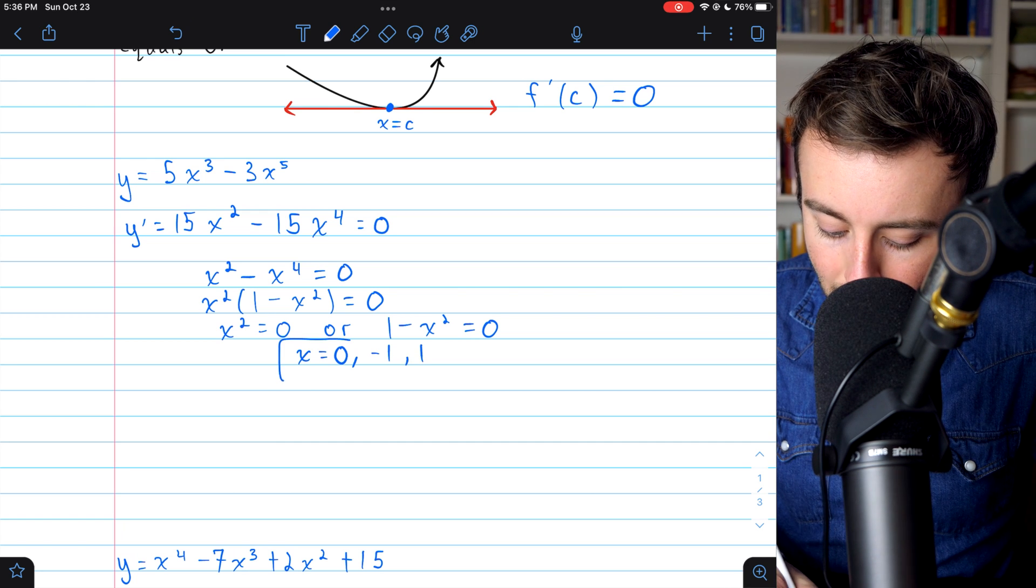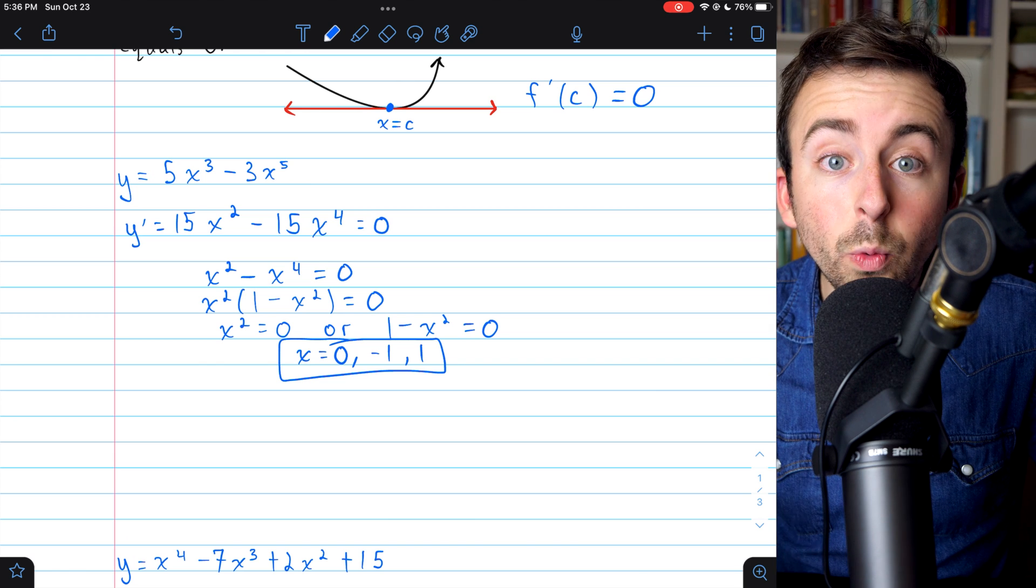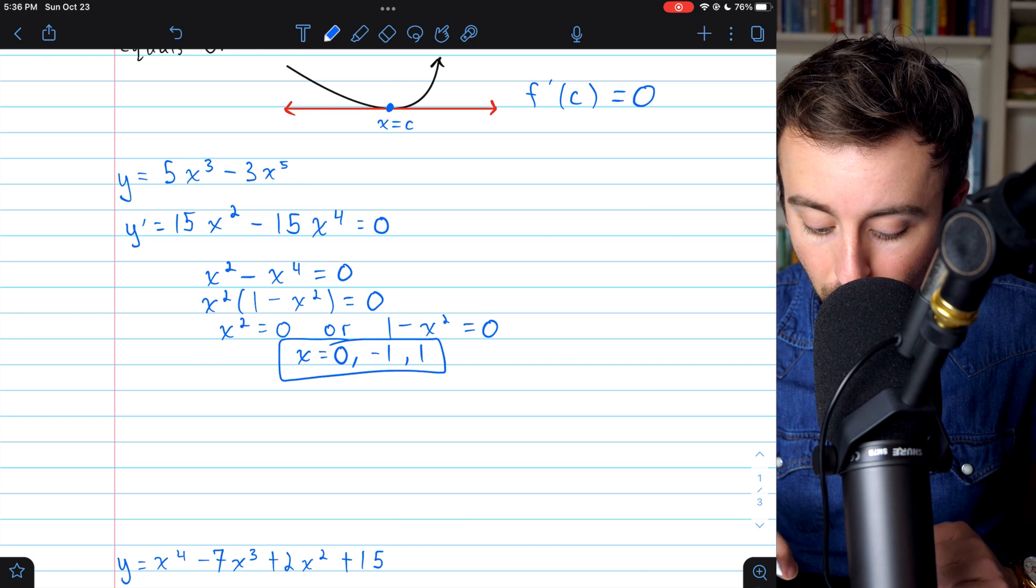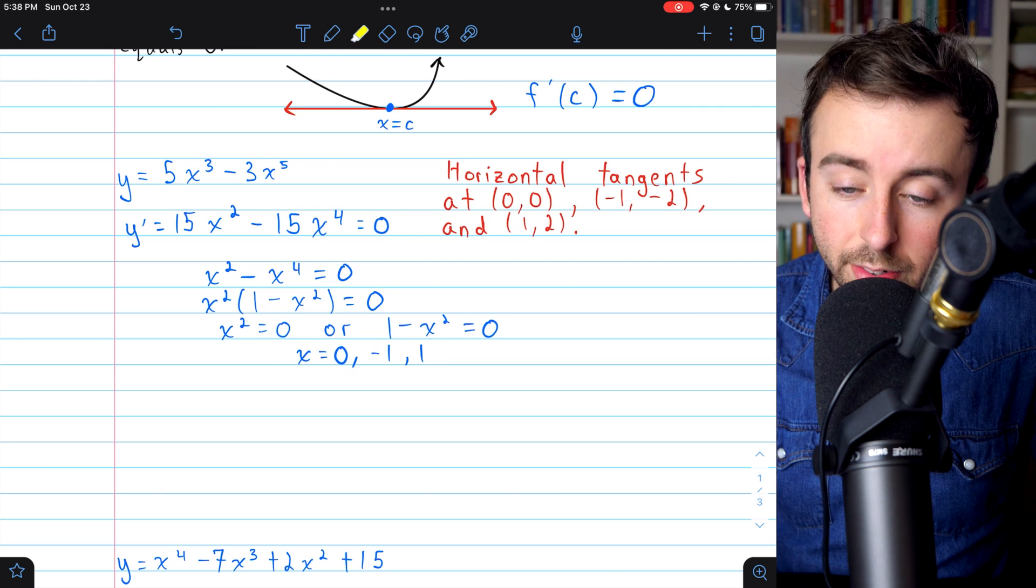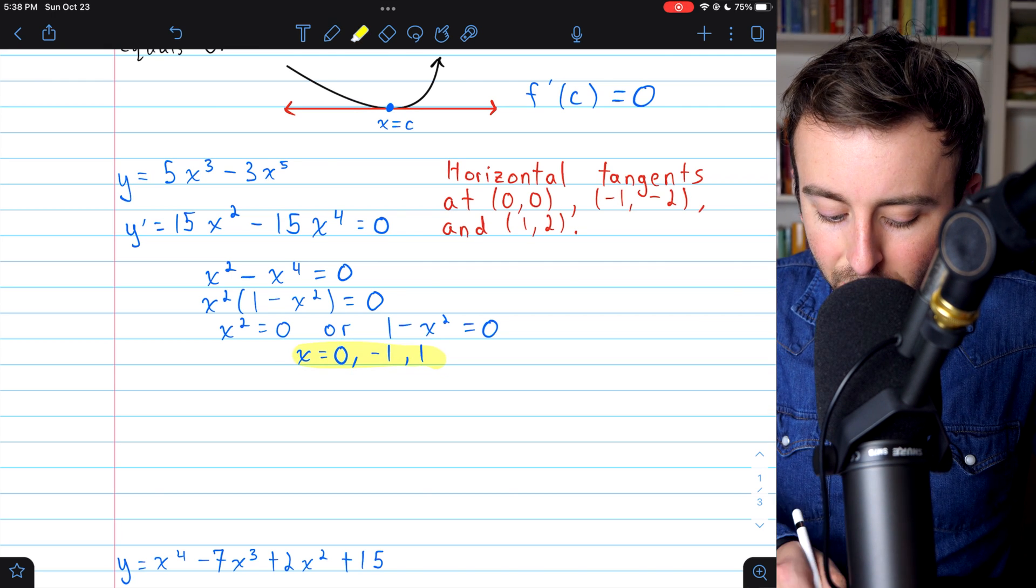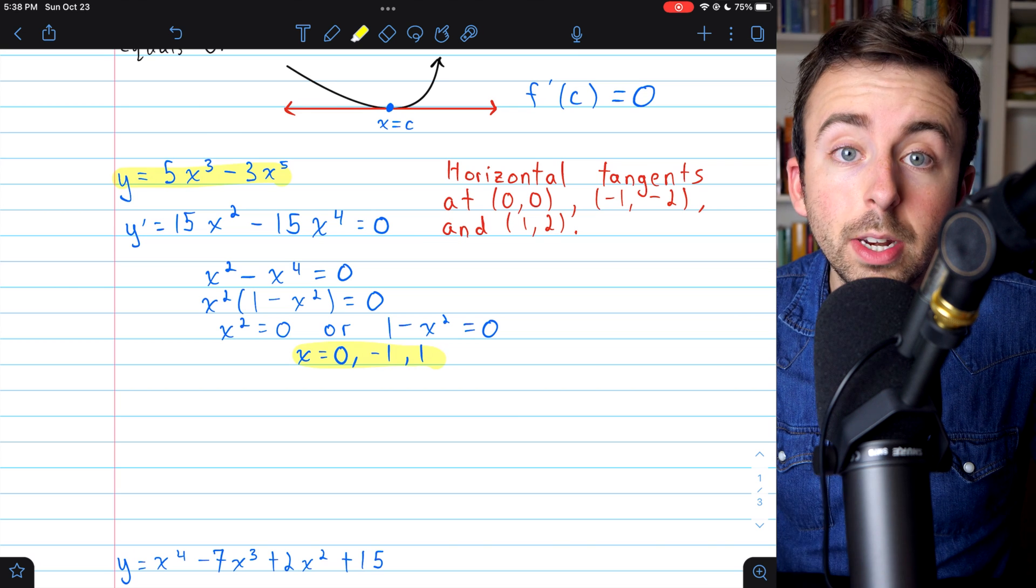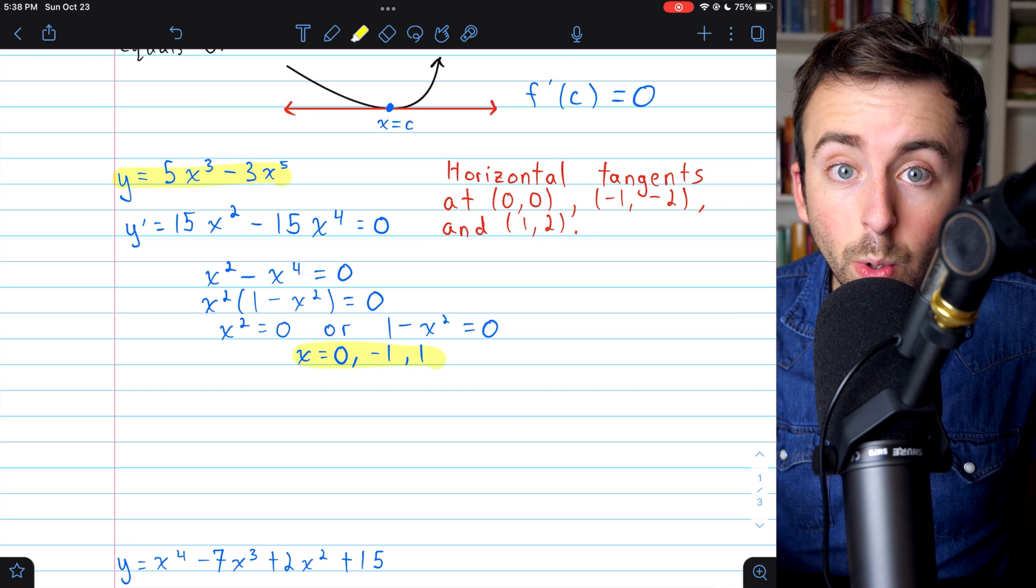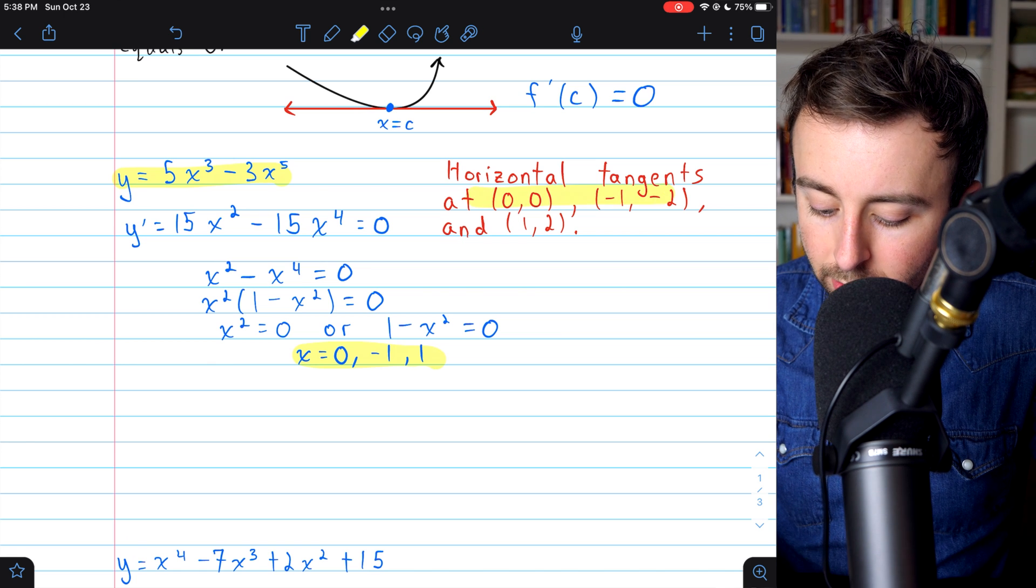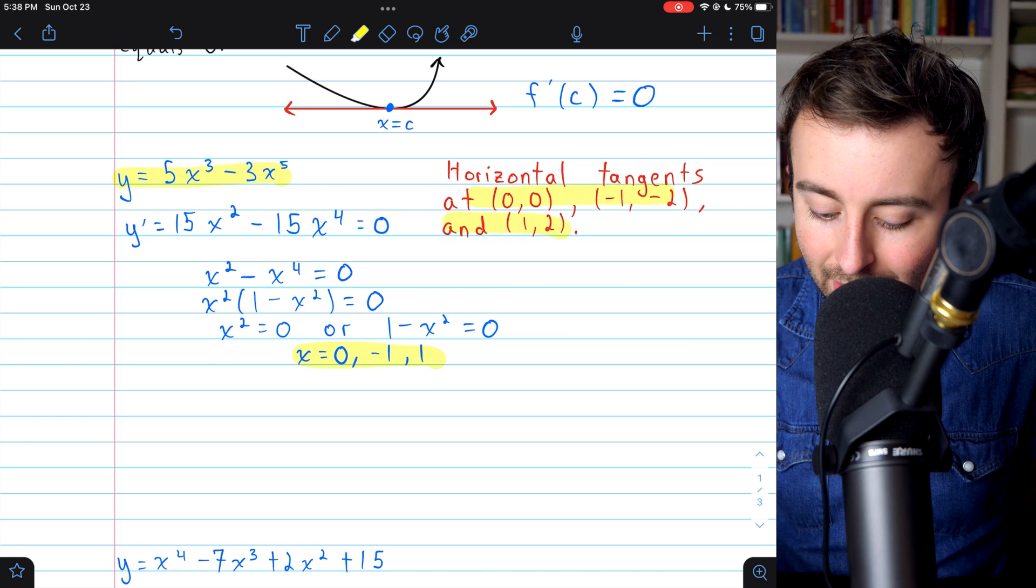And these are all the possible values for x that would make the derivative 0. So this is where all the horizontal tangents are. And if we want to go a step further, we could plug in the x coordinates. We could take those and plug them into the function in order to find the actual points, the xy coordinates, where the horizontal tangents occur. And that's what we get.